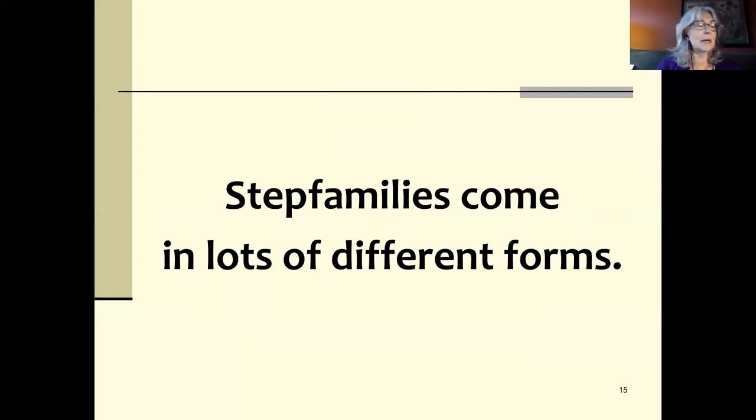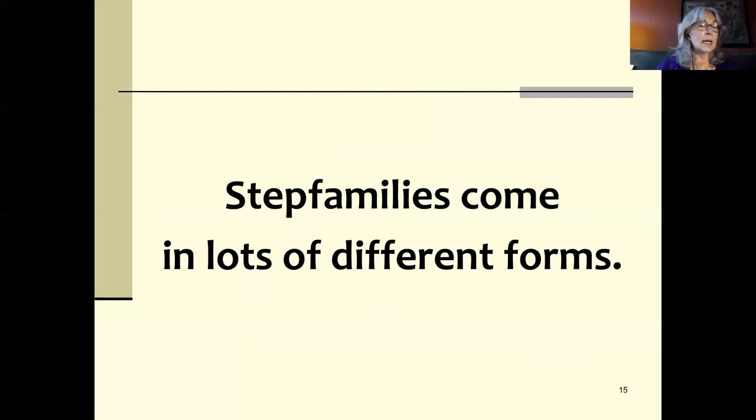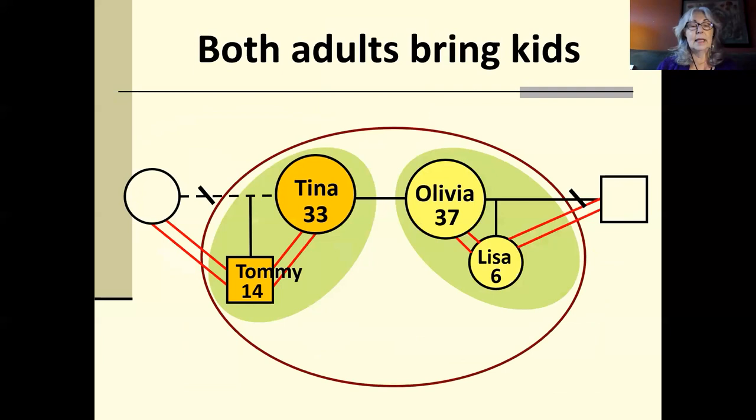Step-families do come in a lot of different forms. In Carl and Sophie's family, only one adult brings kids. In this step-family, both kids bring kids. And as you can see, this happens to be a lesbian family. Right now, most families headed by LGBTQ folks are step-families. The age of coming out is going down, or at least it was before Trump came into office. And as stigma lifts, we will see more families, first-time families like Tina's first-time family.